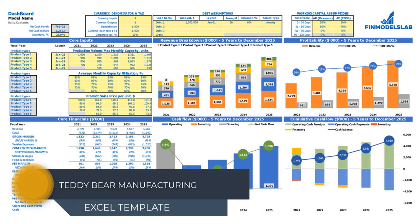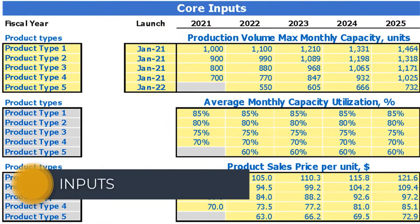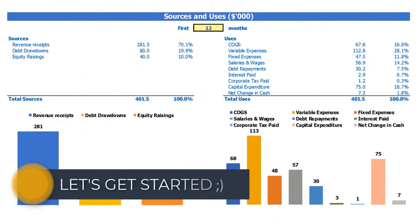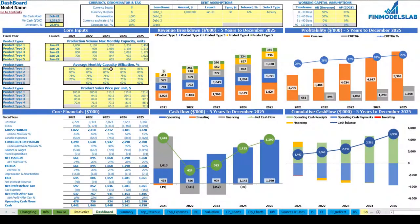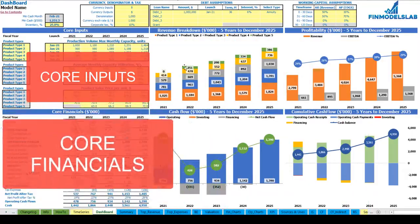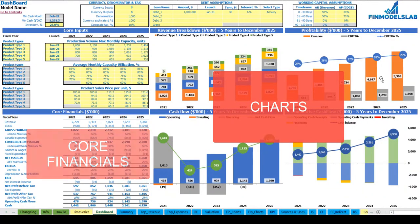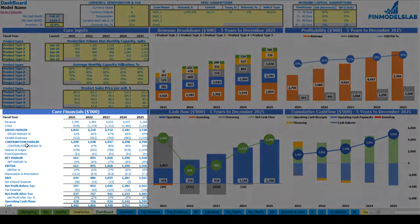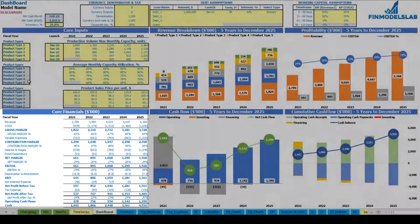Hello. In this video I'm going to walk you through the financial model Excel template. I will show you the main inputs, the core outputs, reports and charts. On the dashboard you can set up your core inputs or drivers for the model, review the core charts such as revenue breakdown, profitability, cash flow and cumulative cash flow, and also review the core financials which is a summary of your financials by years.